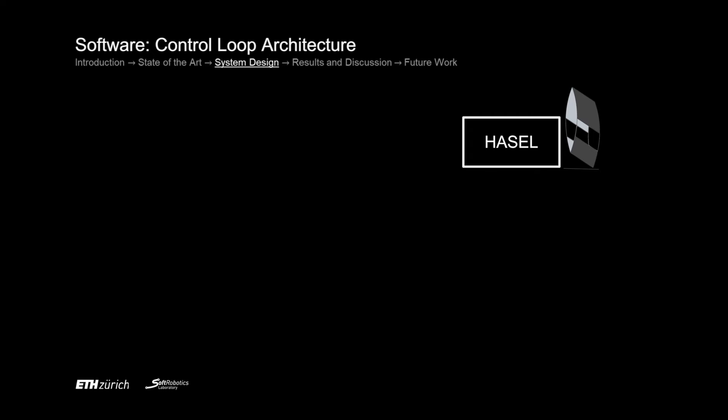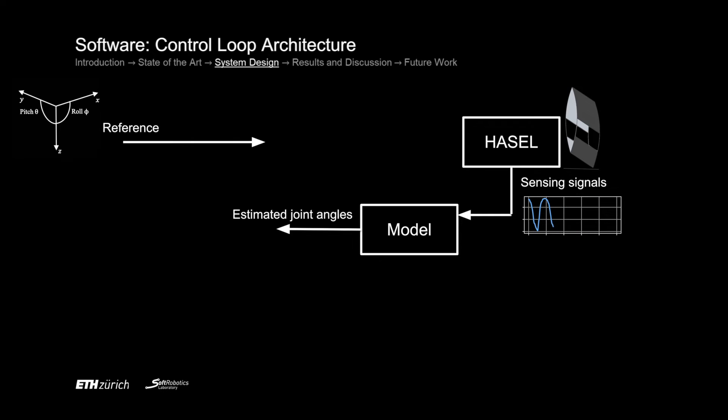Thanks to our new HASEL design, we receive four high quality low voltage sensing signals of the four HASEL actuators. However, those signals are in a tendon space, meaning one signal per linear movement, but we need to map them to the task space, that is the joint angles, to compare them to the reference position. To do this we use a regression model that outputs the estimated joint angles in the task space. Now we can close the loop and feed the error into a PID controller which in turn outputs the commanded voltages to control the HASELs.